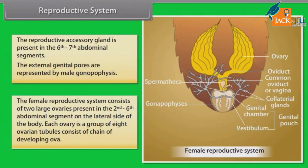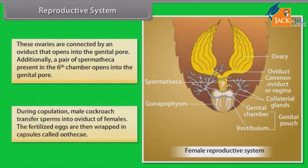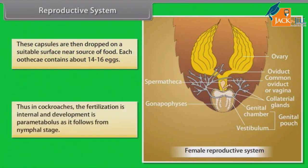The female reproductive system consists of two large ovaries present in the second to sixth abdominal segment on the lateral side of the body. Each ovary is a group of eight ovarian tubules consisting of a chain of developing ova. These ovaries are connected by an oviduct that opens into the genital pore. Additionally, a pair of spermathecae opens into the genital pore. During copulation, the male cockroach transfers sperms into the oviduct of the female. The fertilized eggs are wrapped in capsules called ootheca, which are deposited on a suitable surface near a food source. Each ootheca contains about 14 to 16 eggs. Fertilization is internal and development is paurometabolous, following a nymphal stage.